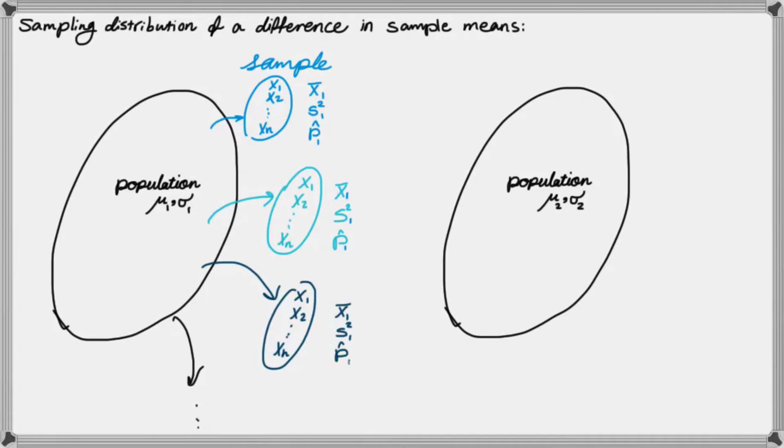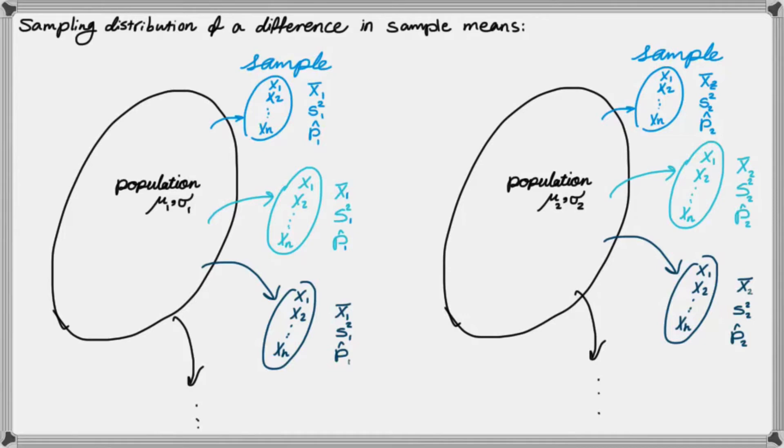Now also I do the same thing from the second population. I keep repeating the sampling process, and every time record one or two specific functions that is of my interest. In this example, we're specifically looking into sample averages. So suppose that you record the samples from each of these populations every time you take a sample. And in the end,